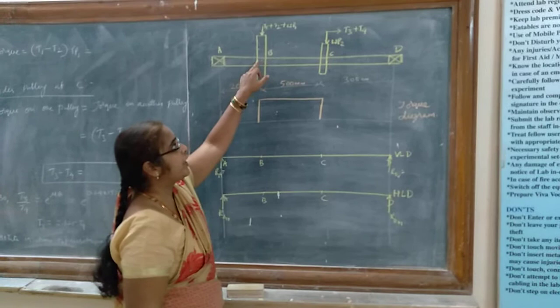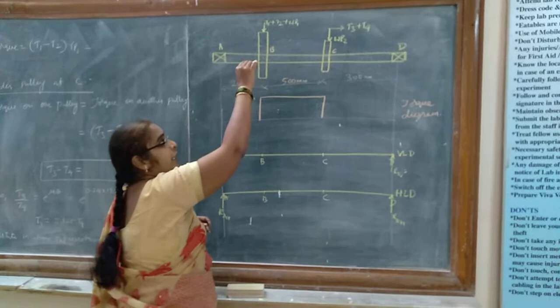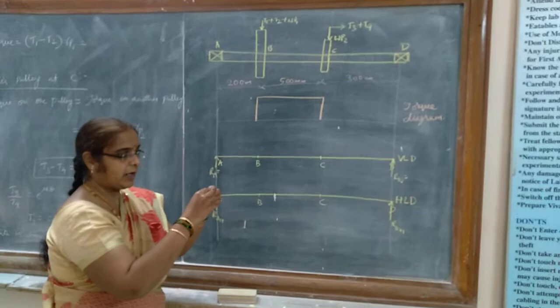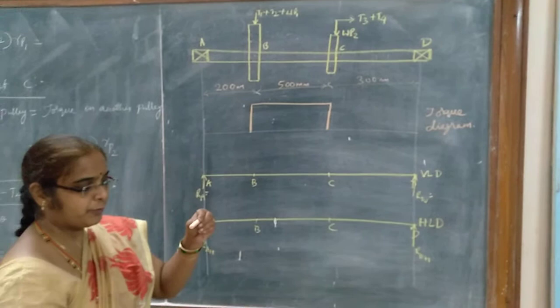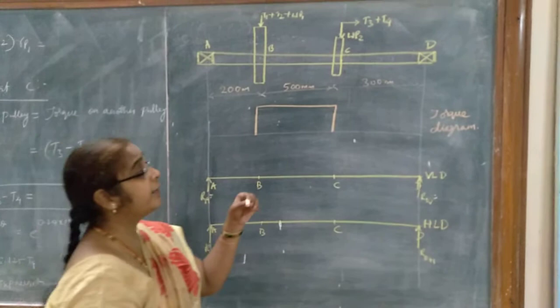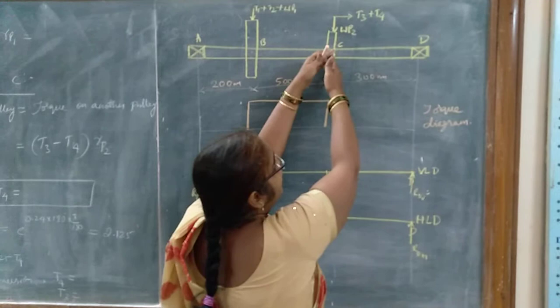This pulley is going to drive another pulley which is directly below it. This is the one pulley mounted on the shaft and below it there is one more pulley. This pulley drives the one below it with the help of a belt. Another pulley is mounted at point C and it is driven by a motor.